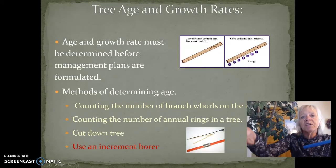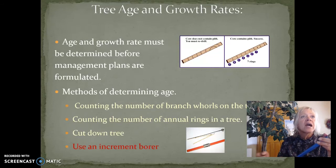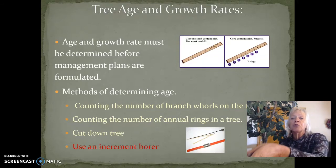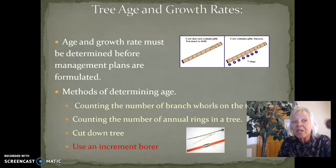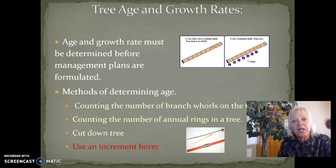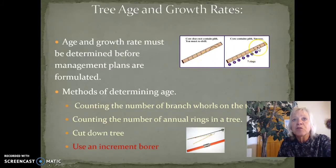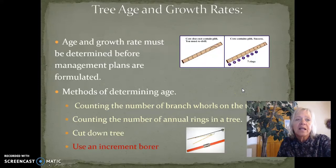We have an increment bore here and also a picture of it. You can determine age and growth rate using this increment bore. You can count the number of branches, count the number of annual rings, cut down the tree, or use an increment bore — which is the best way to get a core sample. You must get the pith of the tree and then count the annual rings.